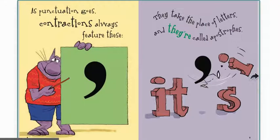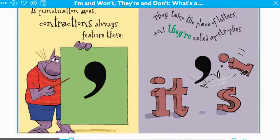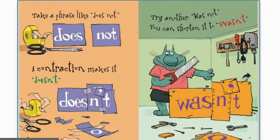As punctuation goes, contractions always feature apostrophes — they take the place of letters and they're called apostrophes. See how it's bumping that 'I' out of the way? Take a phrase like 'does not' — a contraction makes it 'doesn't.' Try another: 'was not' — you can shorten it to 'wasn't.'